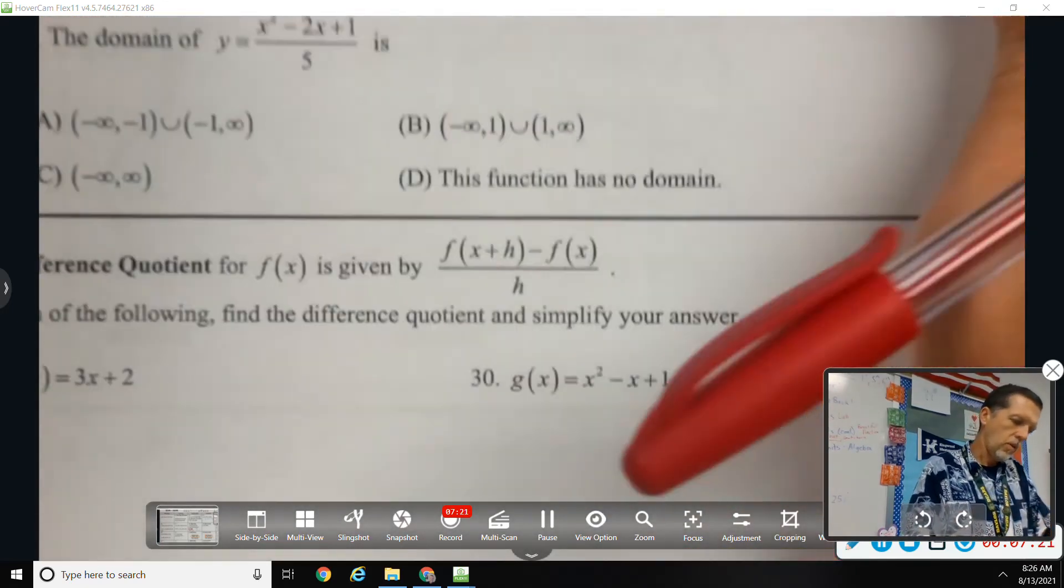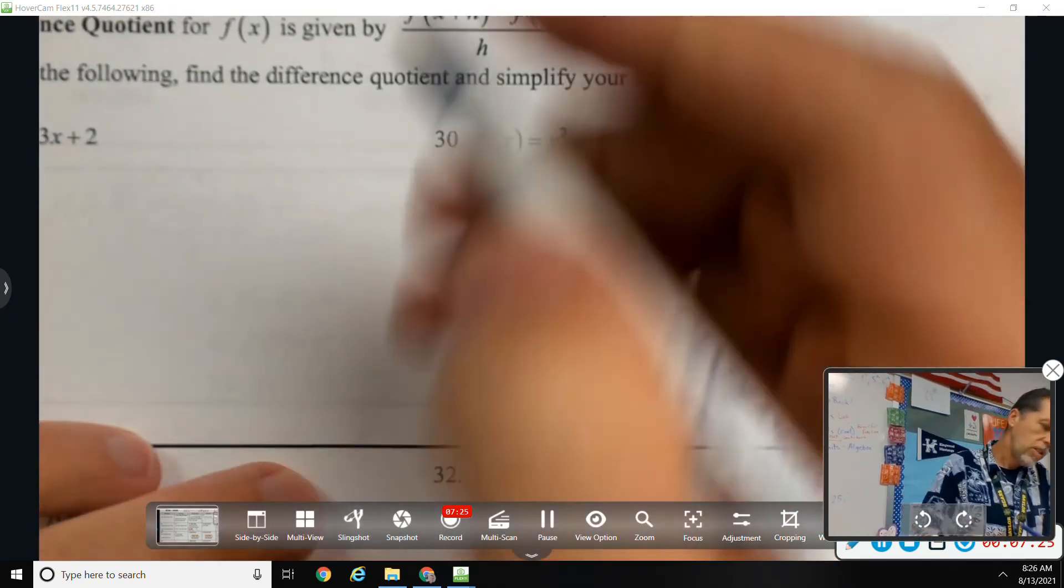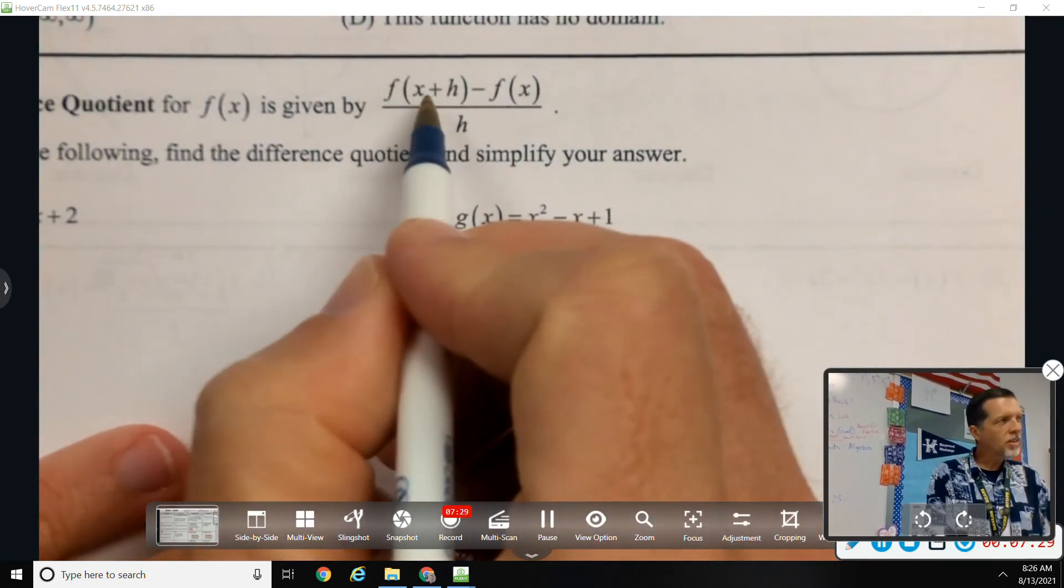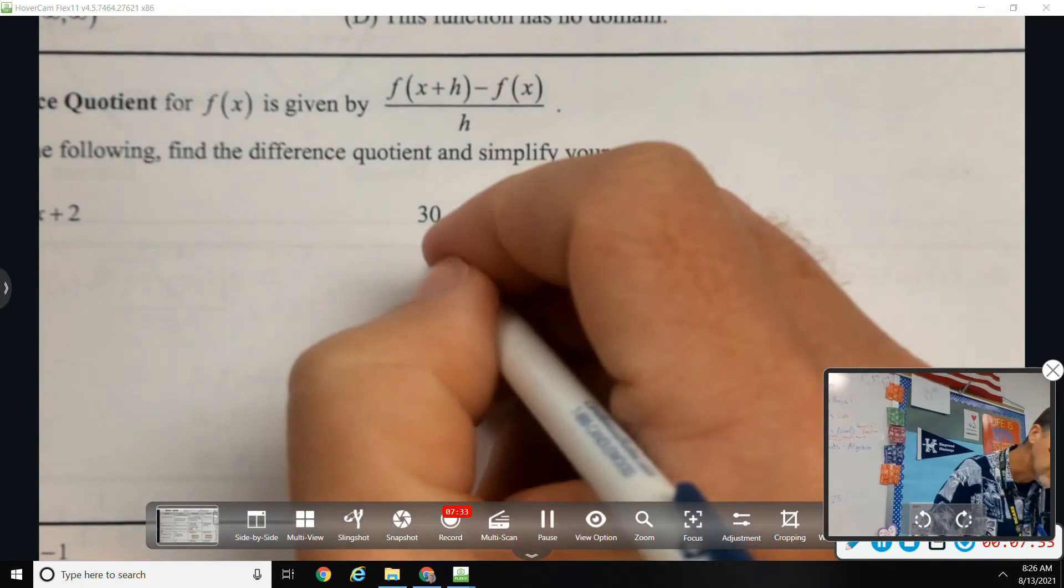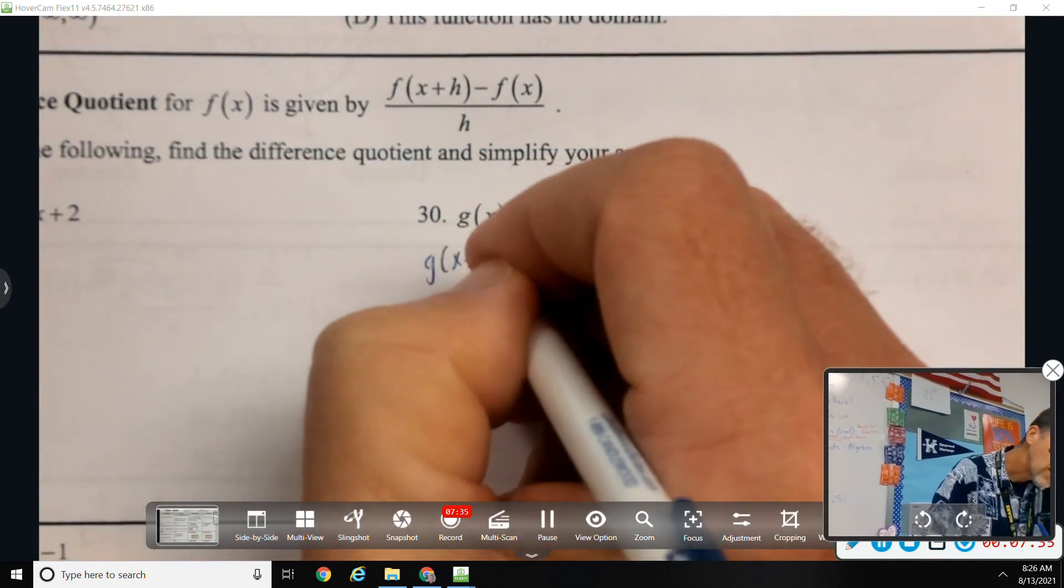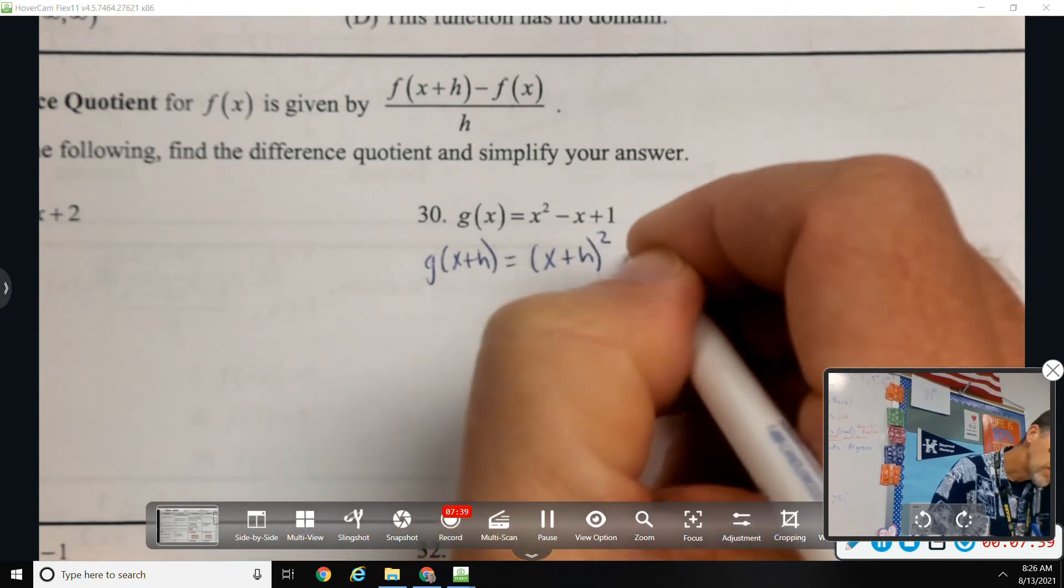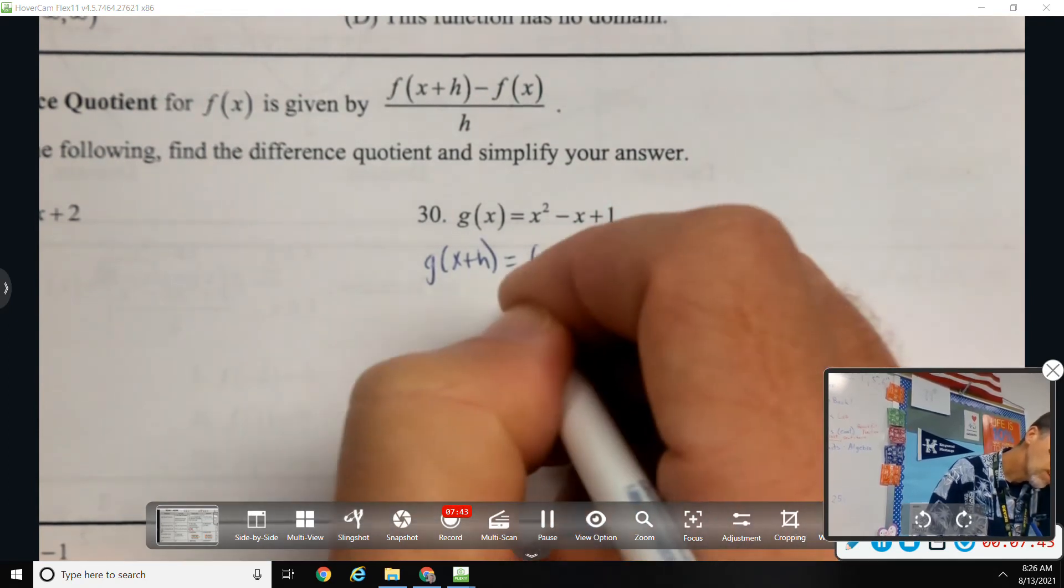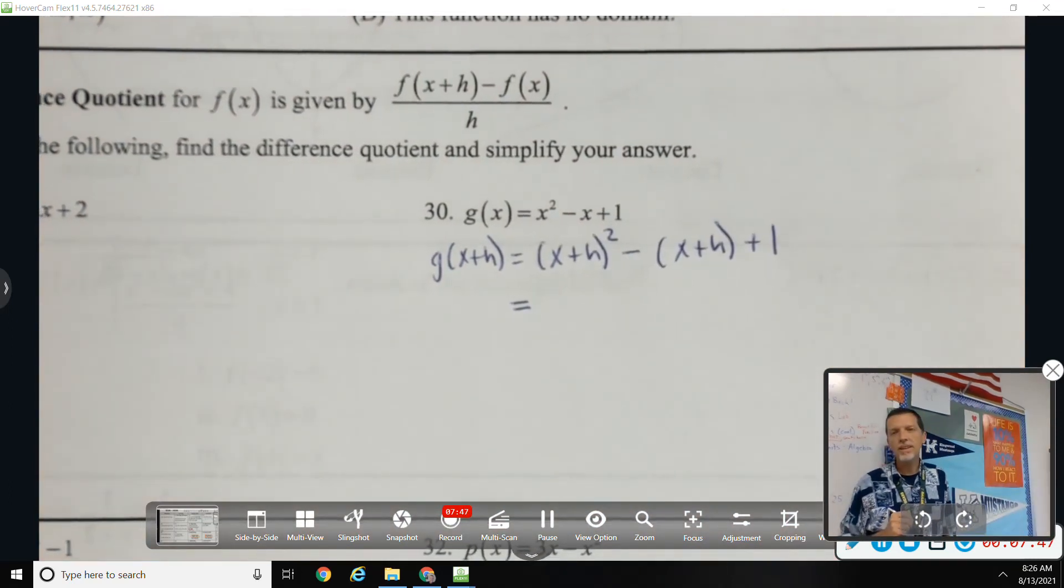Number 30. Okay, a good old difference quotient. So job one is to find f of x plus h, job two is to plug everything in, and then hope we don't make any mistakes after that. So in place of x goes x plus h, and let the messiness begin.